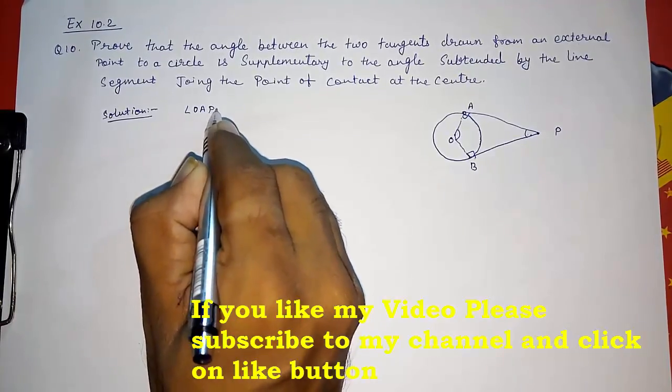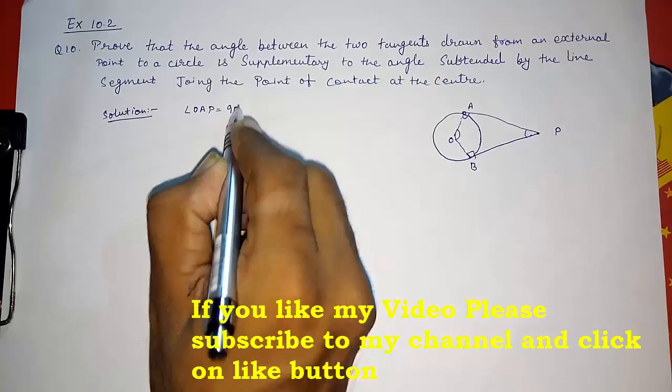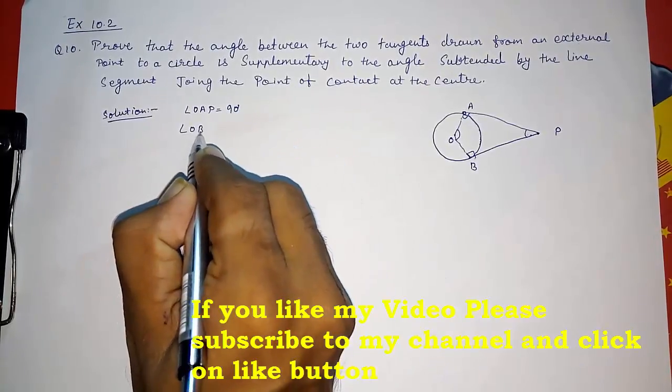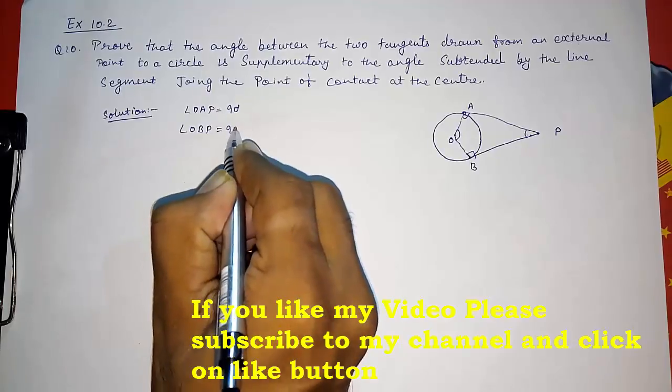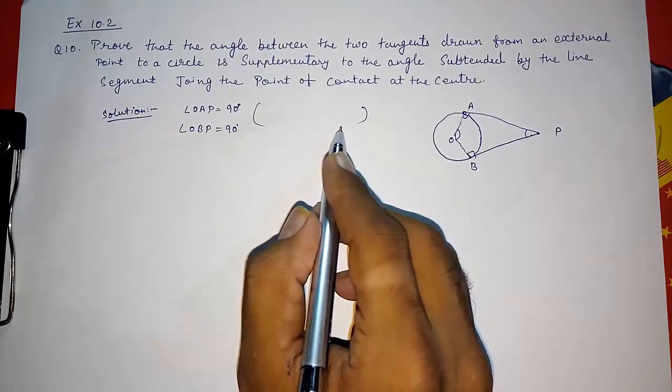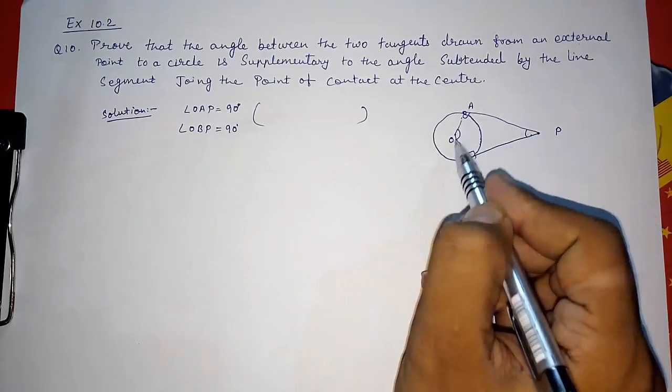Angle OAP is equal to 90 degrees and angle OBP also equals to 90 degrees by Theorem 10.1. If you want to write the statement, you can write the whole statement also. Now we know it is a quadrilateral.